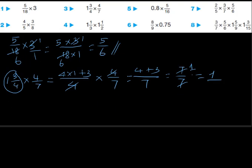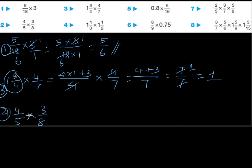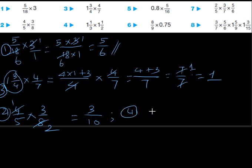The third subdivision is 4/5 × 3/8. We can directly cancel 4 and 8 — 1×4=4, 2×4=8 — giving 1/2 instead. We cannot cancel 3 and 5, so we multiply numerators and denominators separately: 1×3=3 over 5×2=10. The answer for the third one is 3/10.